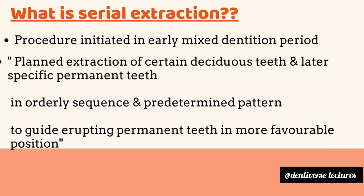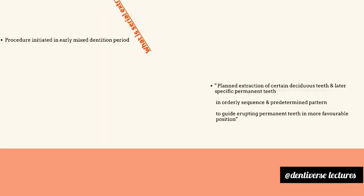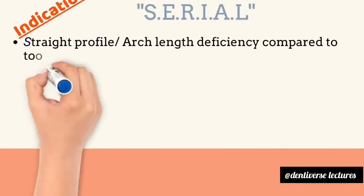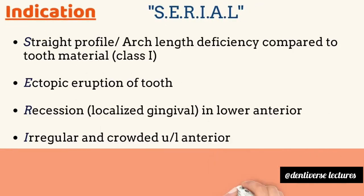What is serial extraction? It is the planned extraction of certain deciduous teeth and later permanent teeth in an orderly sequence and predetermined pattern to guide permanent teeth into a more favorable position. The mnemonic for indications is 'SERIAL STRAIGHT PROFILE CLASS ONE'.